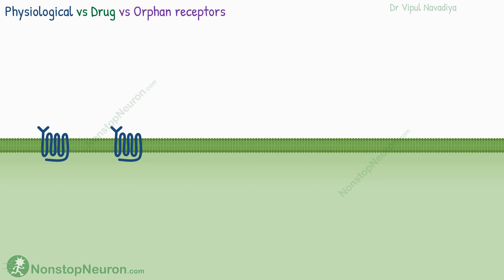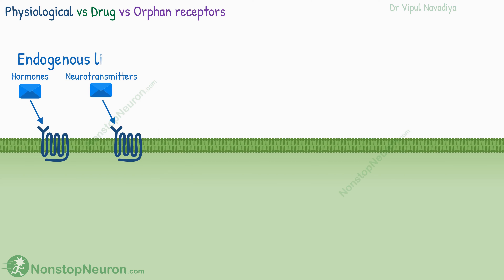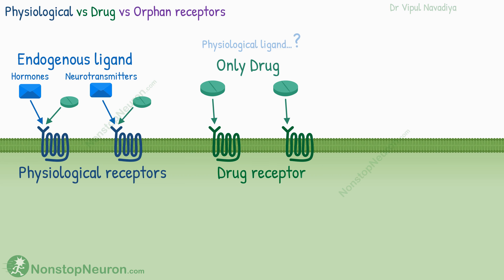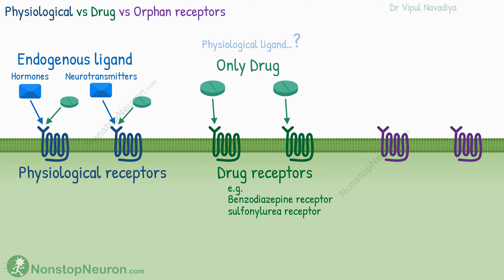Next, three related terms. Hormones and neurotransmitters relay their message to receptors for endogenous messengers — these are called physiological receptors. Usually drugs also act on the same receptors. But apart from them, there are receptors in the body where only drugs act and we don't know the physiological ligands yet — these are called drug receptors; for example, benzodiazepine receptors and sulfonylurea receptors. Finally, receptors for which we know neither endogenous nor exogenous ligands are called orphan receptors.